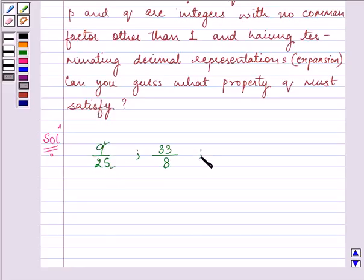Then we can have one more example that will be 329 by 400. After looking at these examples, we can guess the property of q that must satisfy, that is,